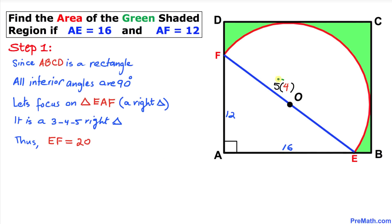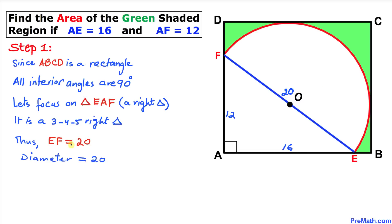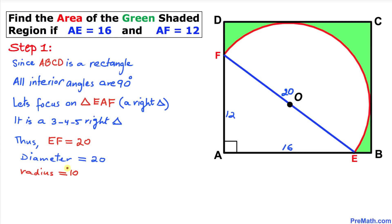So EF equals 5 times 4, which is 20. Since EF is also the diameter of the semicircle, the diameter is 20 and thus the radius of the semicircle is 10 on each side.